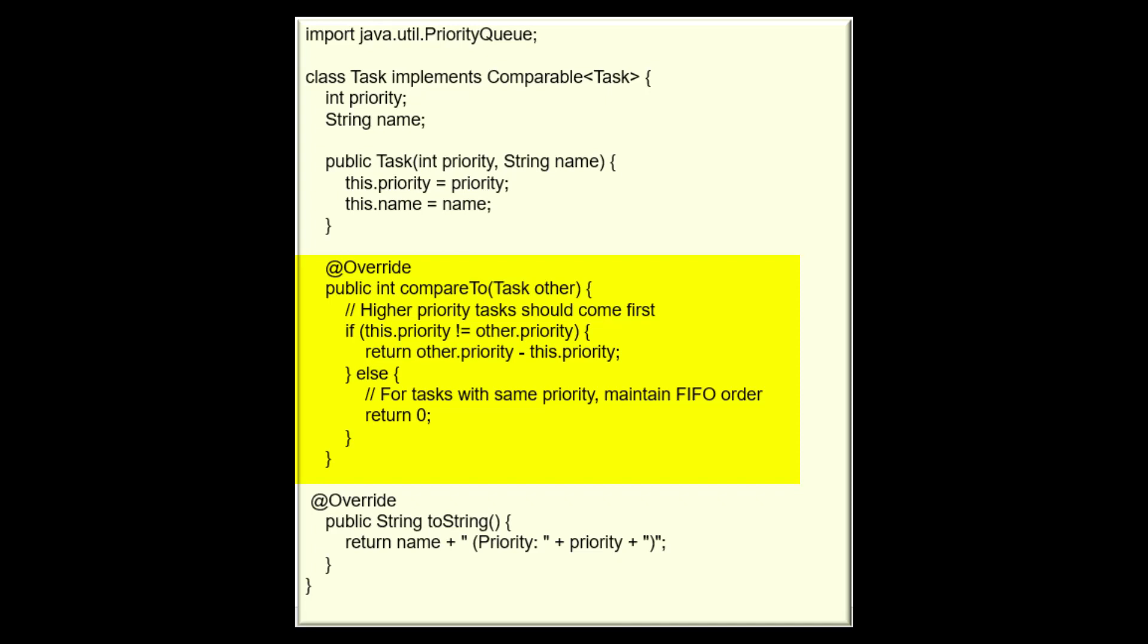If the priorities are the same, it returns zero, indicating that the tasks have the same priority and should maintain their original order, which is FIFO, first in first out.